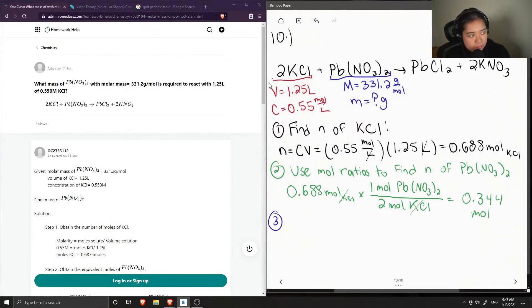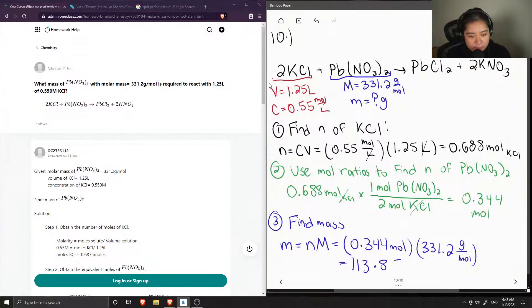So now step three is to find the mass. So if we recall that mass is equal to the number of moles times molar mass, we can just plug in our values. So 0.344 moles of the lead nitrate times its molar mass, which is 331.2 grams per mole. So our grams is 113.85 grams is needed.